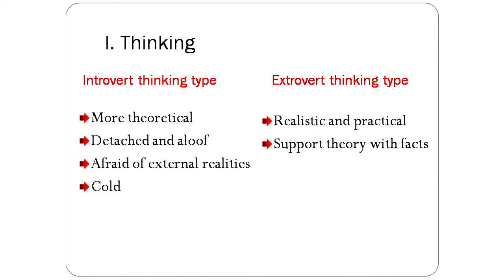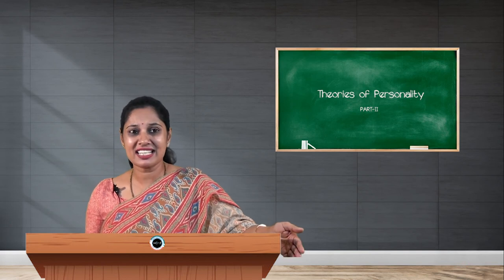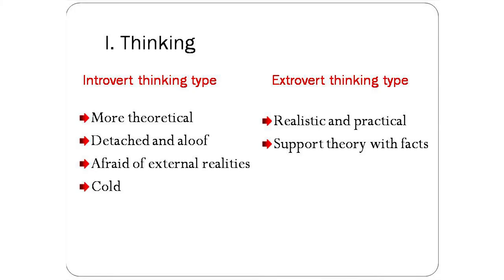Aloof means they are not friendly; they are afraid of external realities and very cold-blooded people. Such personalities are called introvert thinking type. Extrovert thinking type, on the other hand, are people who are realistic and practically oriented. They want something supported by facts; they don't rely on theory but on facts. If a theory is supported by facts, they do accept it. Extrovert thinking types are rational in nature. So introvert thinking type is aloof and unfriendly, whereas extrovert thinking type supports theory with facts.